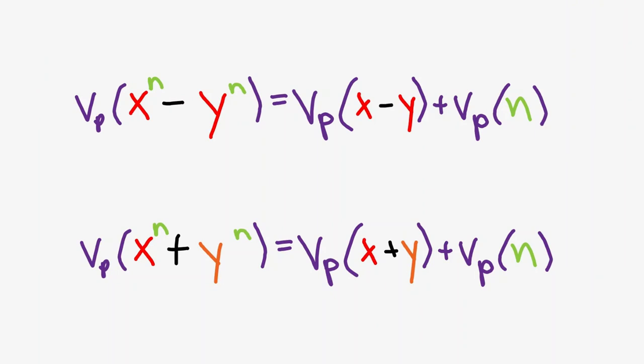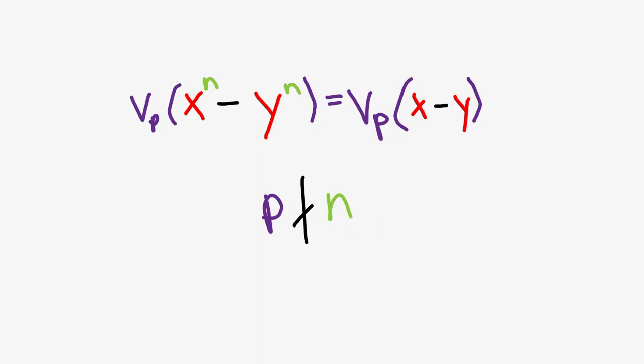Note that when n has no factors of p, v sub p of n is zero. This results in the following simpler equation, which we will prove first.